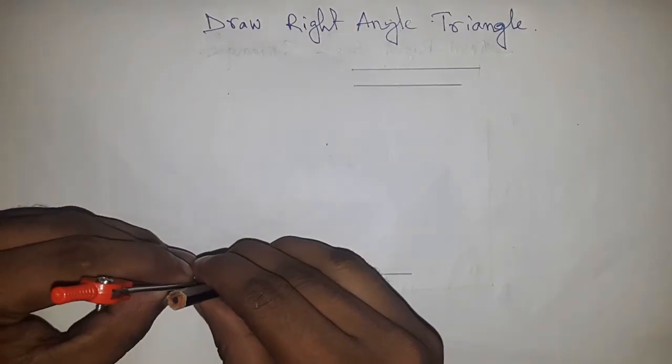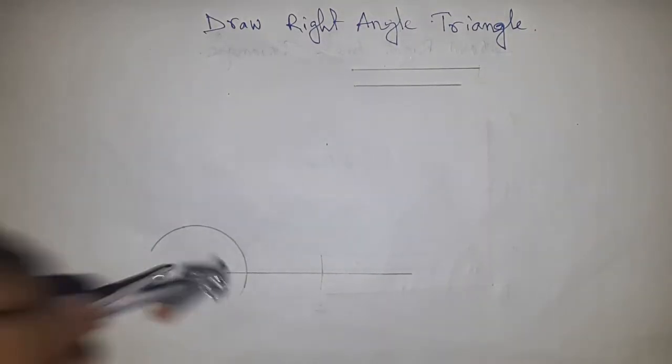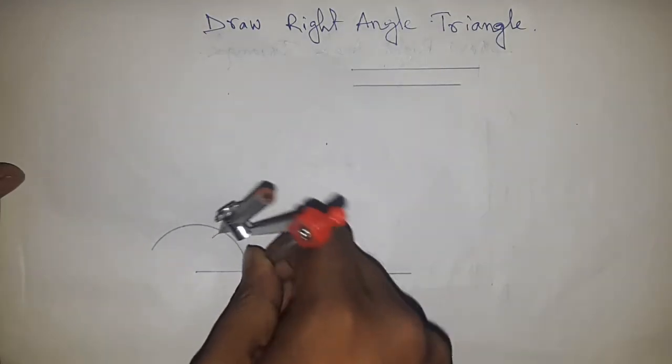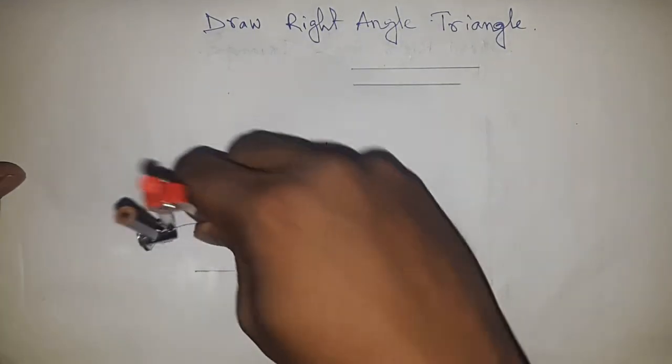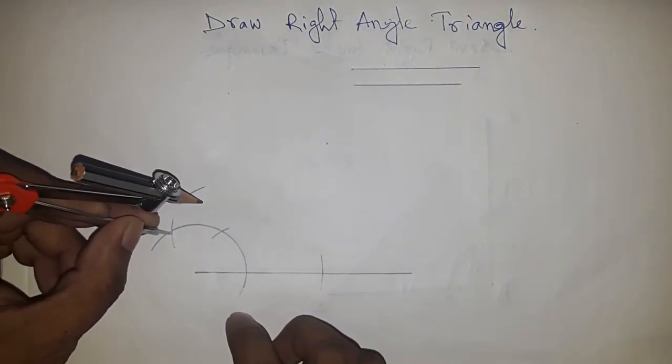I am going to draw a 90 degree angle on this point. So putting compass here and drawing an arc by this way with same length and putting here and cut the arc.